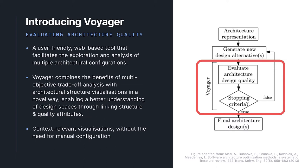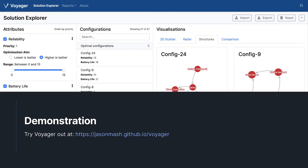Our approach is to provide a user-friendly tool that facilitates the exploration and analysis of these data sets, combining the benefits of multi-objective trade-off analysis with architectural structural visualizations in a novel way. In contrast to other tools, Voyager has been designed to enable a better understanding of the architectural design spaces through the explicit link between structure and quality attributes. We've focused on providing context-sensitive visualizations which make it easy to narrow down the data set and allow users to fully comprehend the architectural trade-offs and understand the common features and structures of matching architectures.